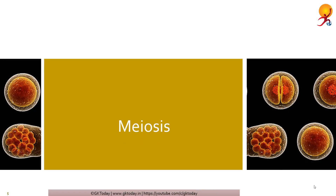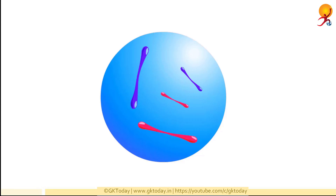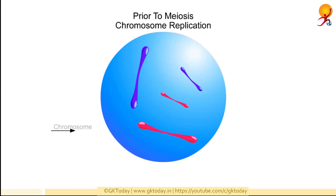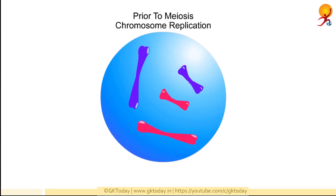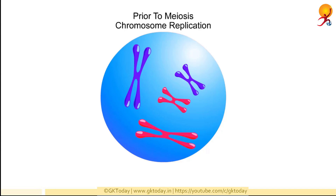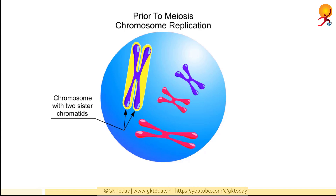We now come to meiosis. Meiosis is the process in the nucleus that divides the chromosome number in half. In this video the nuclear membrane is not shown. Also, the chromosomes are depicted as condensed, although during interphase of the normal cell cycle, they are actually thin and dispersed and not visible under a light microscope. Before a cell enters meiosis, it first replicates its DNA. After DNA replication, the chromosomes are duplicated so that each has two identical sister chromatids connected at a structure called the centromere.